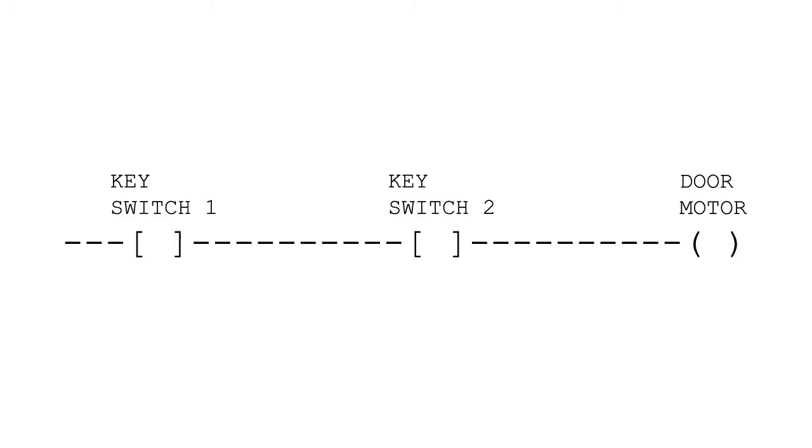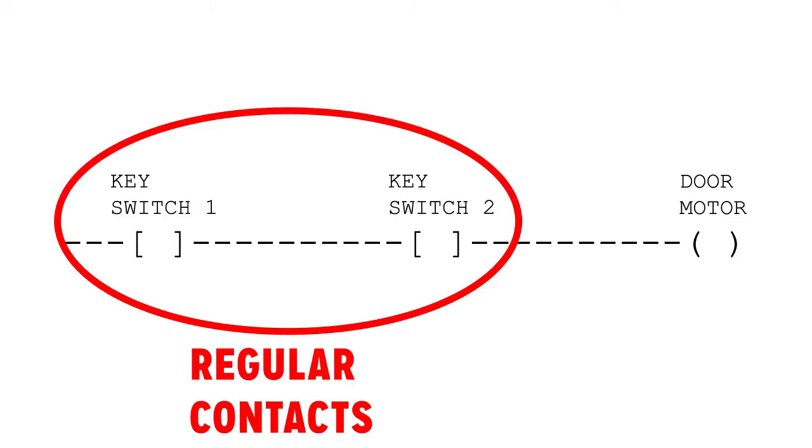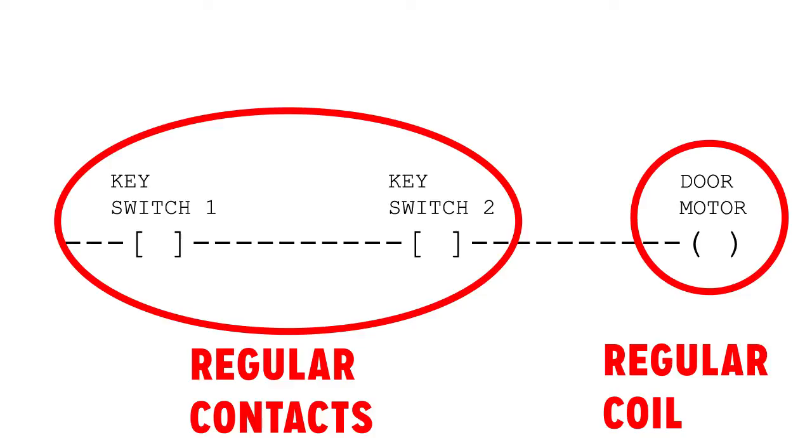Here is a sample of a very simple ladder logic program. We see a ladder logic program with two regular contacts, represented by open and closed brackets, called keyswitch1 and keyswitch2, and one regular coil, represented by open and closed parentheses, that represents a door motor.